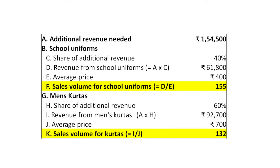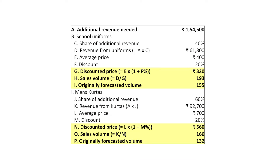We will begin by looking at her forecasted revenues. Sundari is planning to grow her revenues by selling two new products to her existing customers. Since she will offer a discount on the new items, there will be less revenue per item she sells. Hence, to achieve her forecasted revenues, she will need to sell higher volumes as seen here.